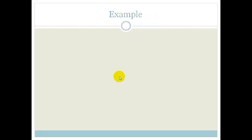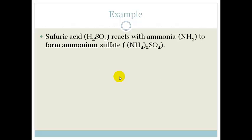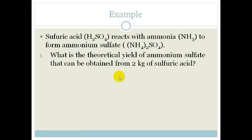So, let's look at an example. Sulfuric acid, which is H2SO4, reacts with ammonia to form ammonium sulfate. They give us all the formulas, so life is good. It says, what is the theoretical yield of ammonium sulfate that can be obtained from 2 kilograms of sulfuric acid? So, they want to know how much ammonium sulfate will we get if we have 2 kilograms of sulfuric acid.